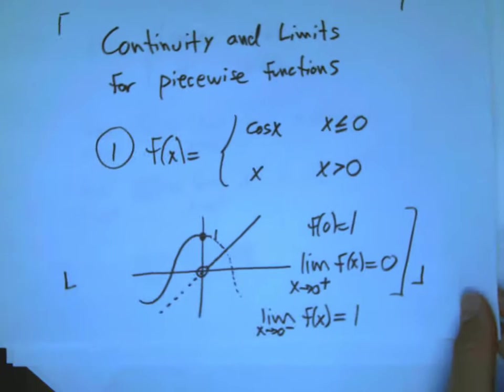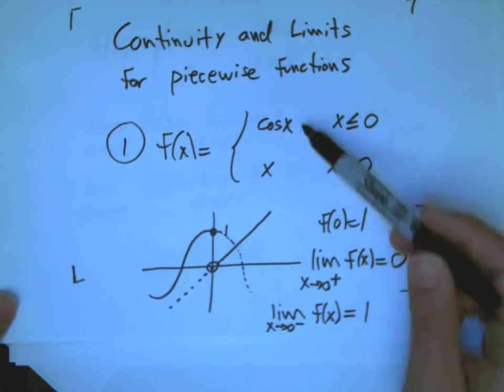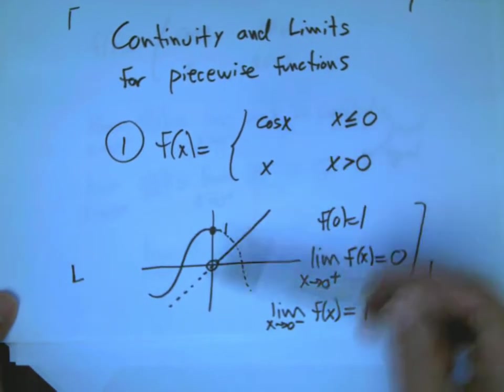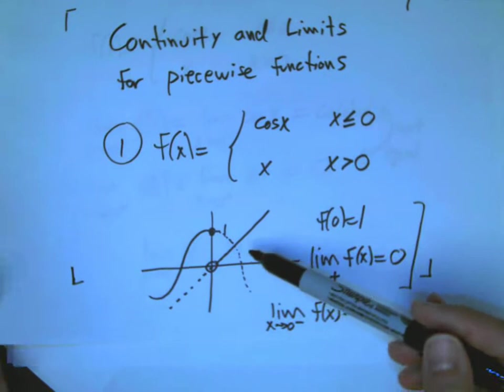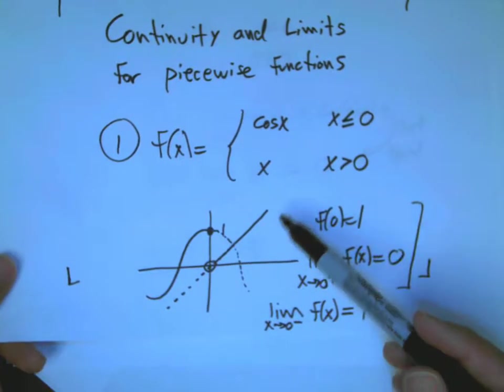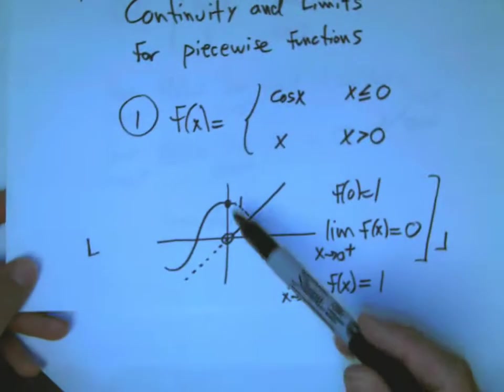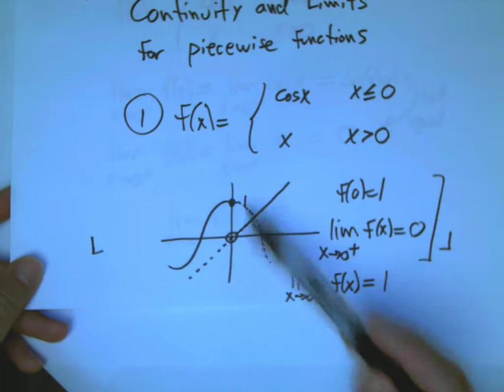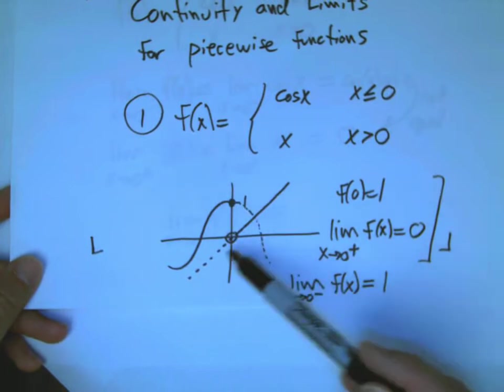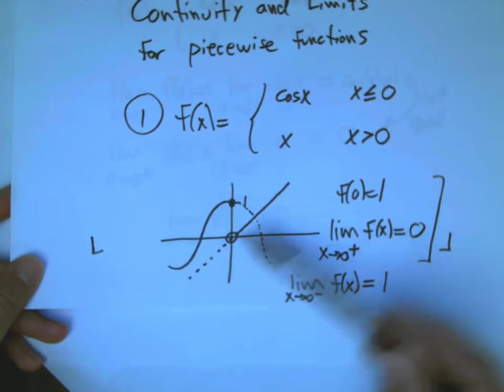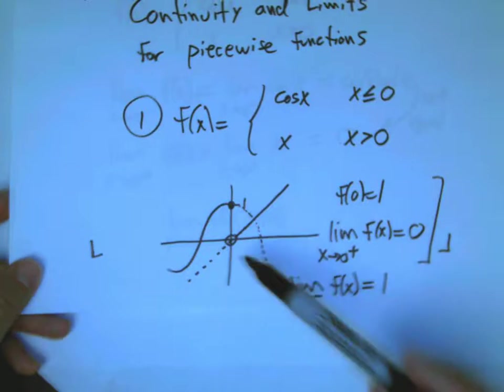Now this function, I purposely chose this to be discontinuous. Let's modify it a little bit so that it will be continuous. To show the function is discontinuous, I just had to focus on one bad point. It doesn't matter if it's good or bad elsewhere, it looks like it's good elsewhere, but it's discontinuous at that point.